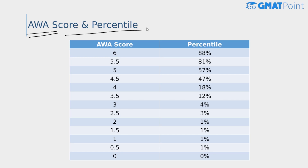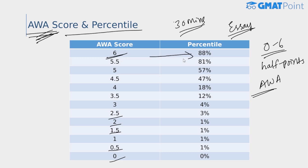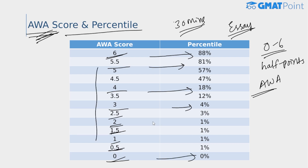Finally, we have the analytical writing assessment scores versus percentiles. 30 minutes is allotted for this section, where you write an essay based on your analysis of a given argument. Scores range from 0 to 6 in half-point intervals. The AWA scores are computed separately and have no effect on the IR, verbal, or quant sections, and are not included in your total GMAT score. For the highest score of 6, the percentile is 88; for 5.5, it's 81; for 4, it's 18; and for 3, it's 4. The remaining scores run from 2 down to 0.